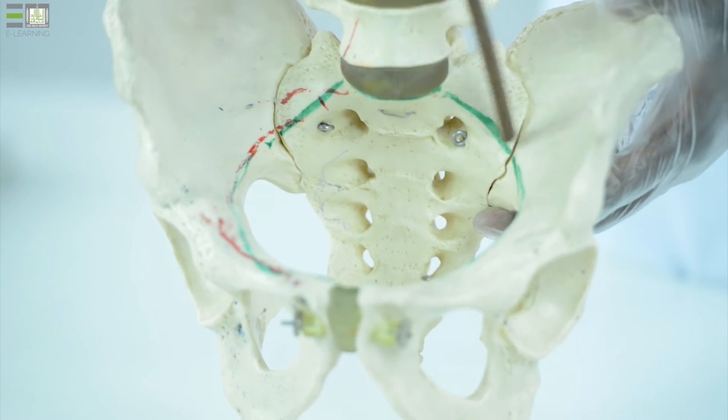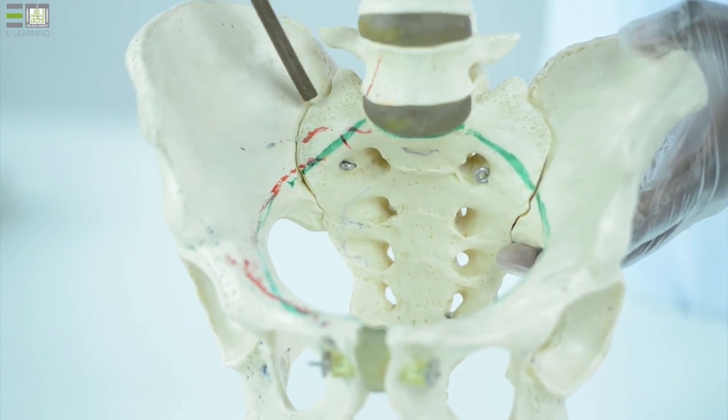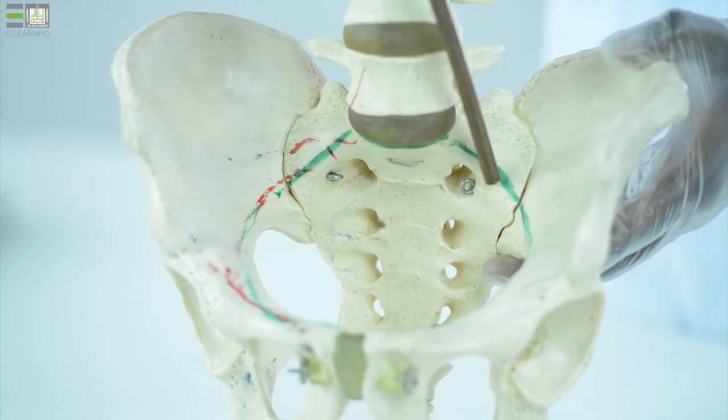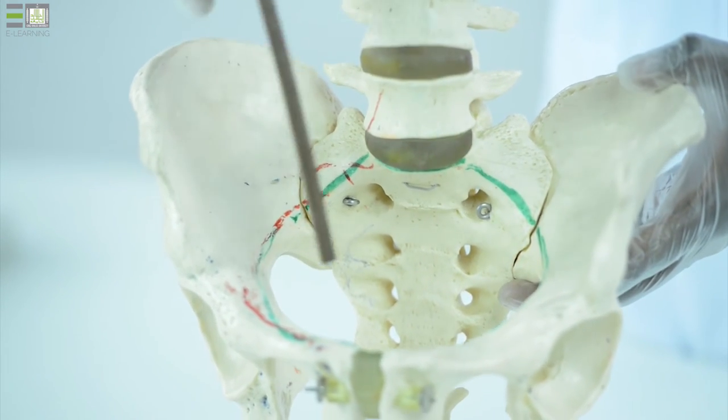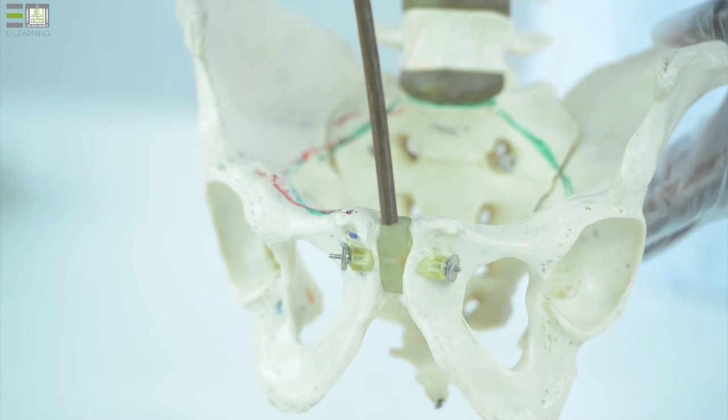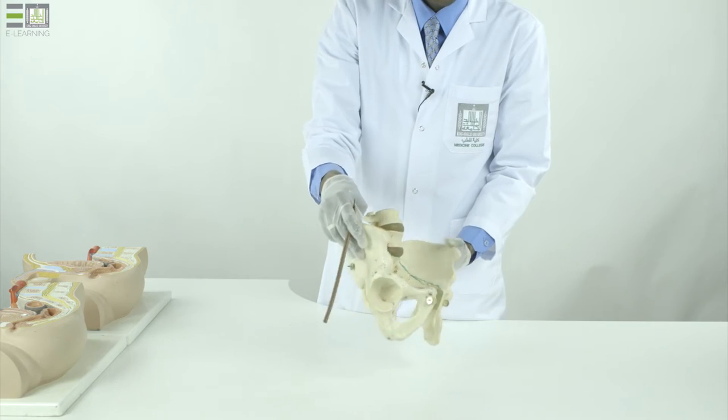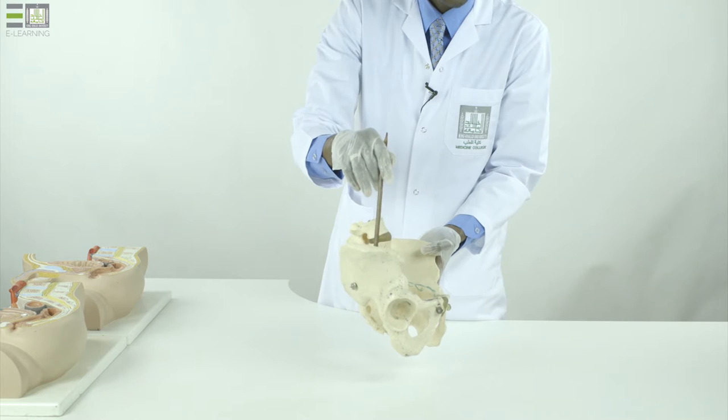The two hip bones articulate at the sacroiliac joint with the lateral edge of the sacrum at the ala of the sacrum. They articulate anteriorly at the symphysis pubis. Each hip bone consists of three bones: